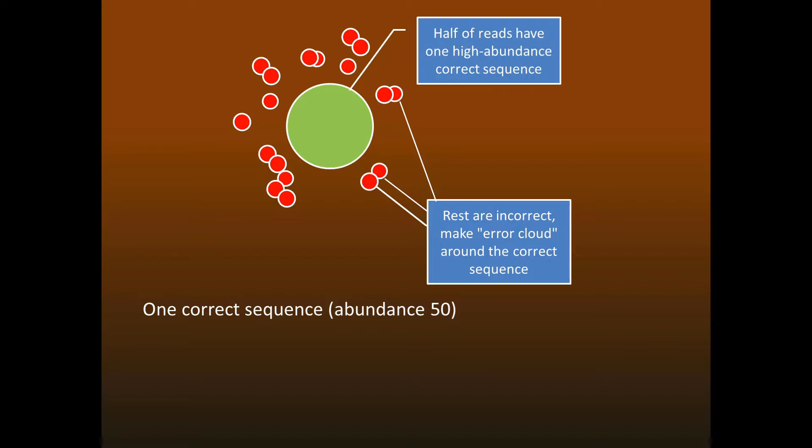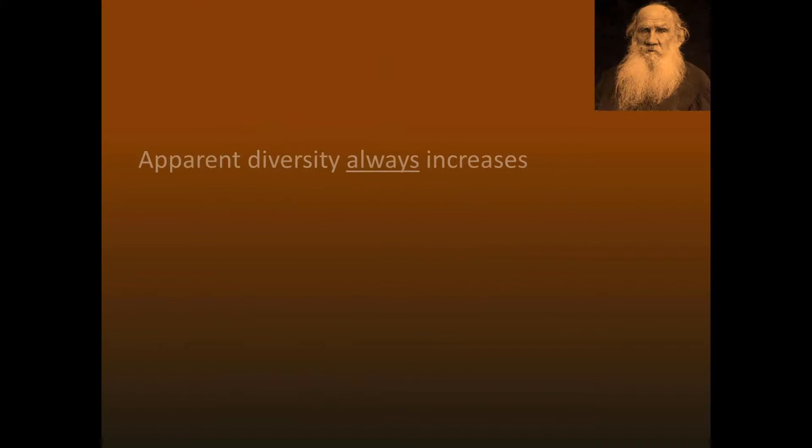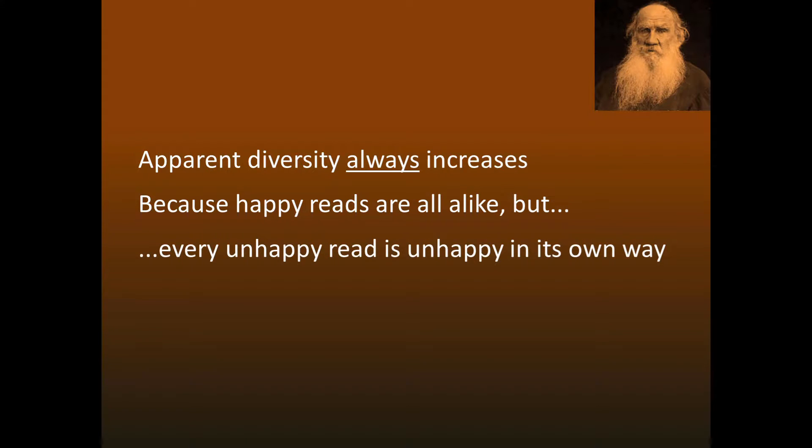As we generate more reads, one high-abundance correct sequence is surrounded by an error cloud of incorrect sequences with low abundance. So after we're done sequencing, we'll have one correct sequence and 50 incorrect sequences. Therefore, approximately 1 in 50, or 2%, of the sequences are correct. So apparent diversity always increases as we add more reads, because all happy reads are alike, while each unhappy read is unhappy in its own way.